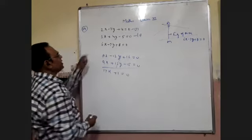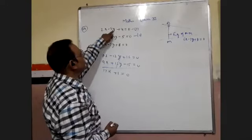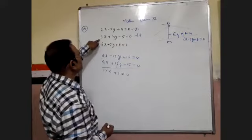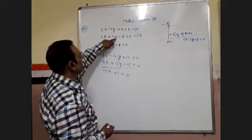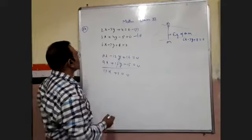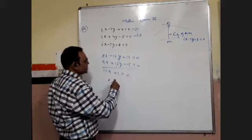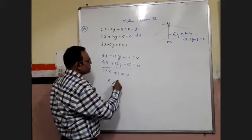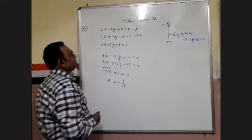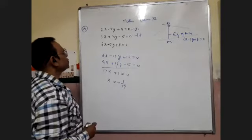We have 4 to 8, 4 to 12, and 4 to 16. We have 3 to 9, 3 to 12, and 3 to 17. After cancelling, we get 17x plus 1 equal to 0, so x is equal to minus 1 upon 17. We then cancel the y coordinate similarly.